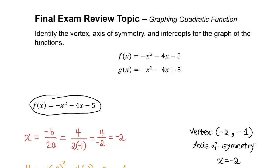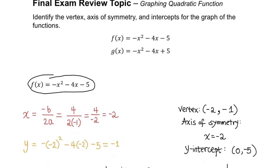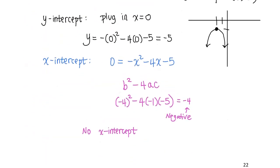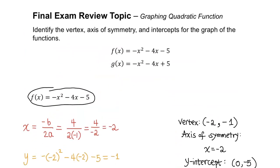In the previous video, we found the vertex, axis of symmetry, and intercepts for f of x. Now, in this video, I'm going to do the same for g of x.